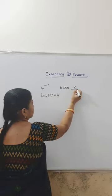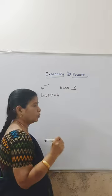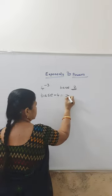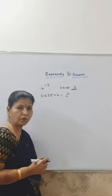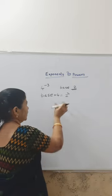What we have to convert it into? Base 2. So, how can we write this as 2 square? 4 is equal to 2 square. We can write like this also.